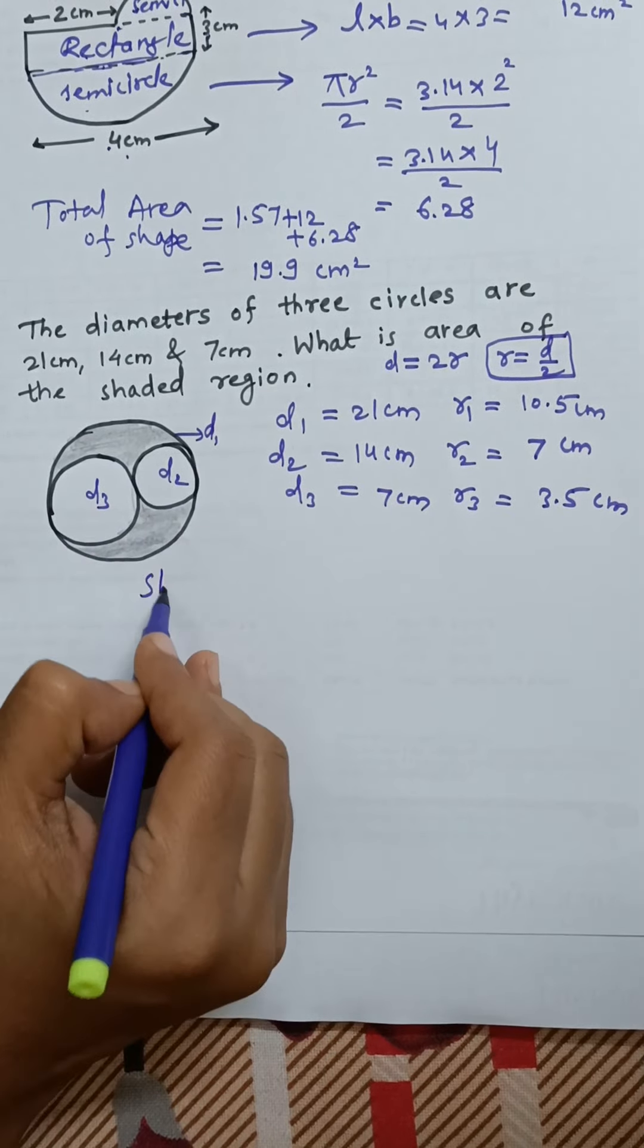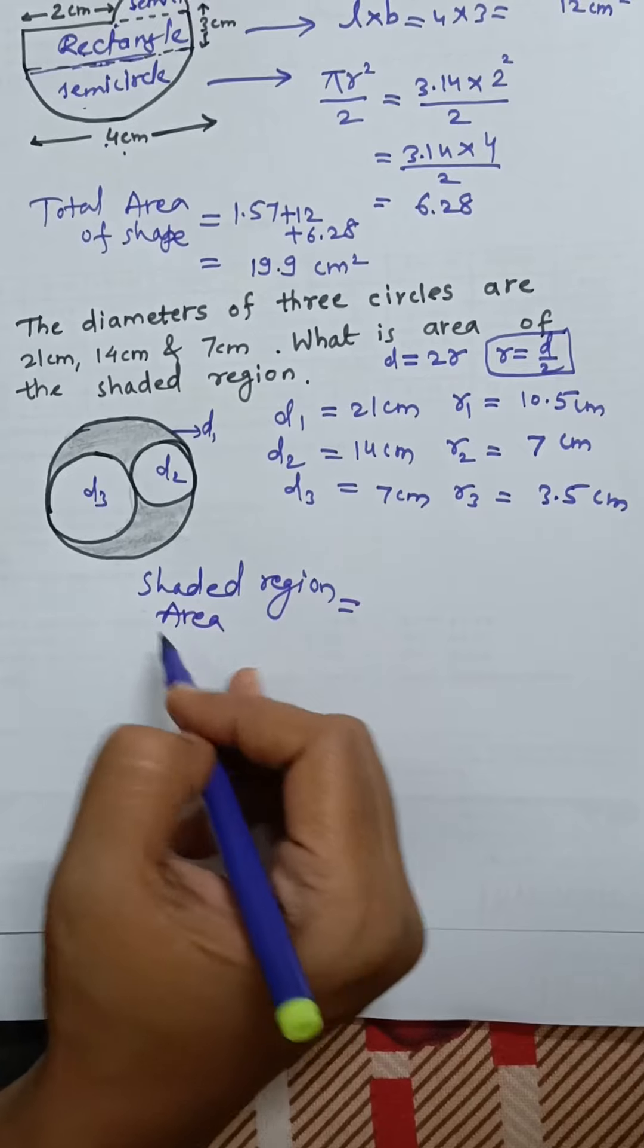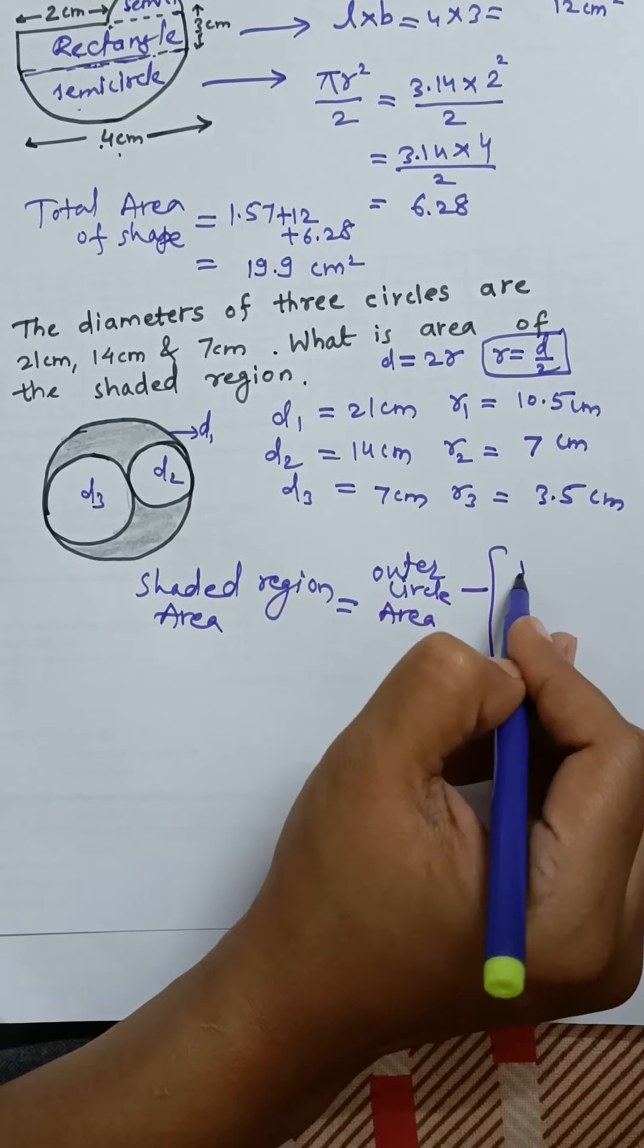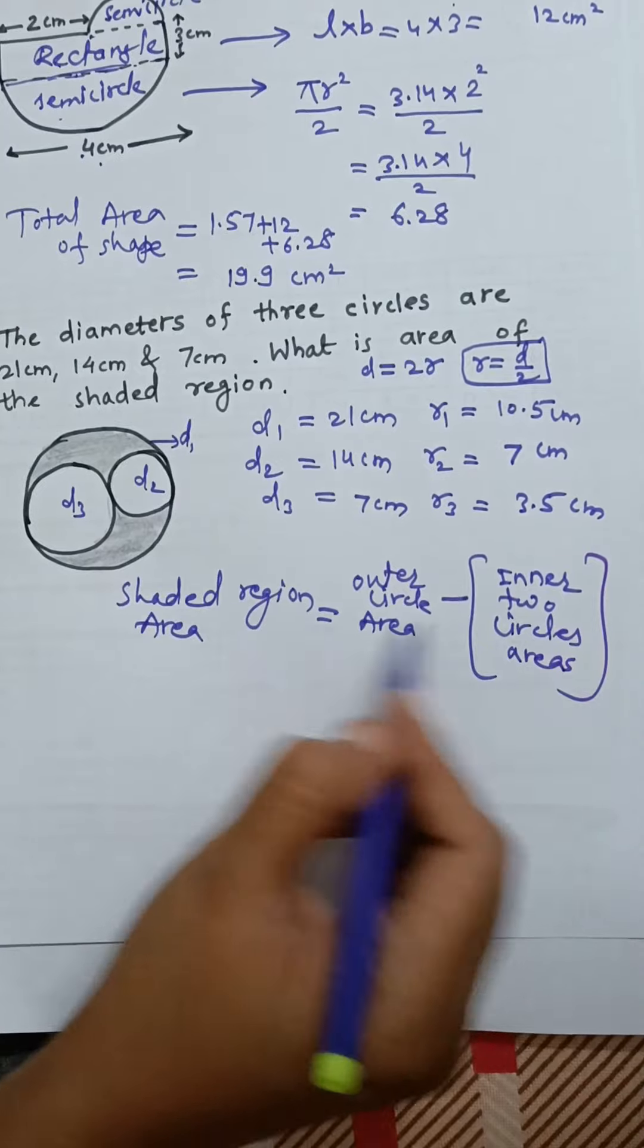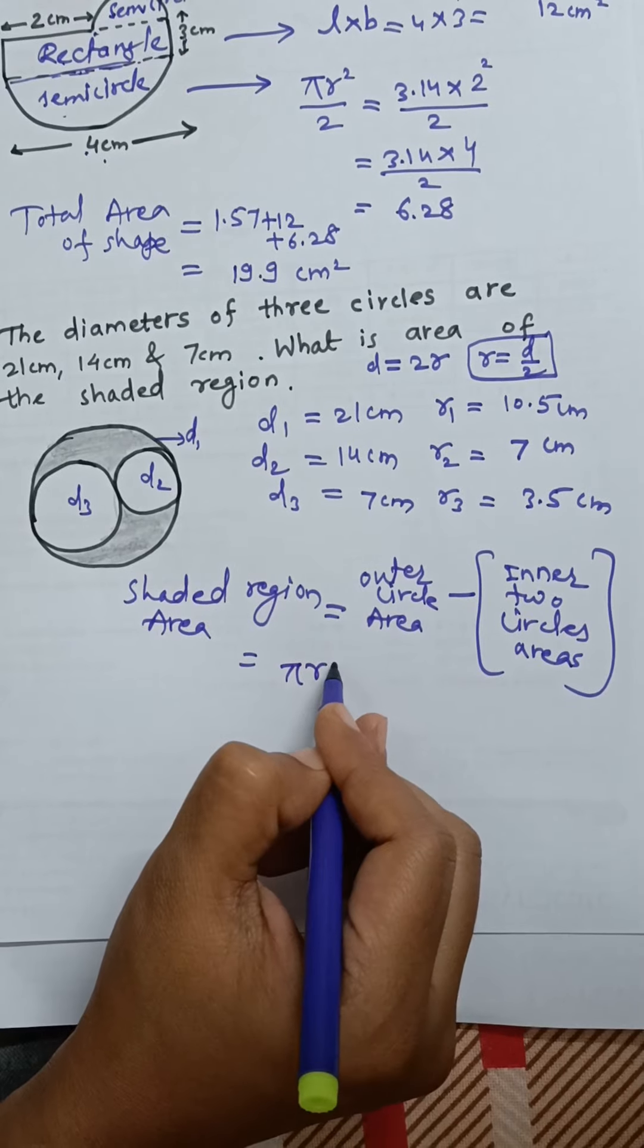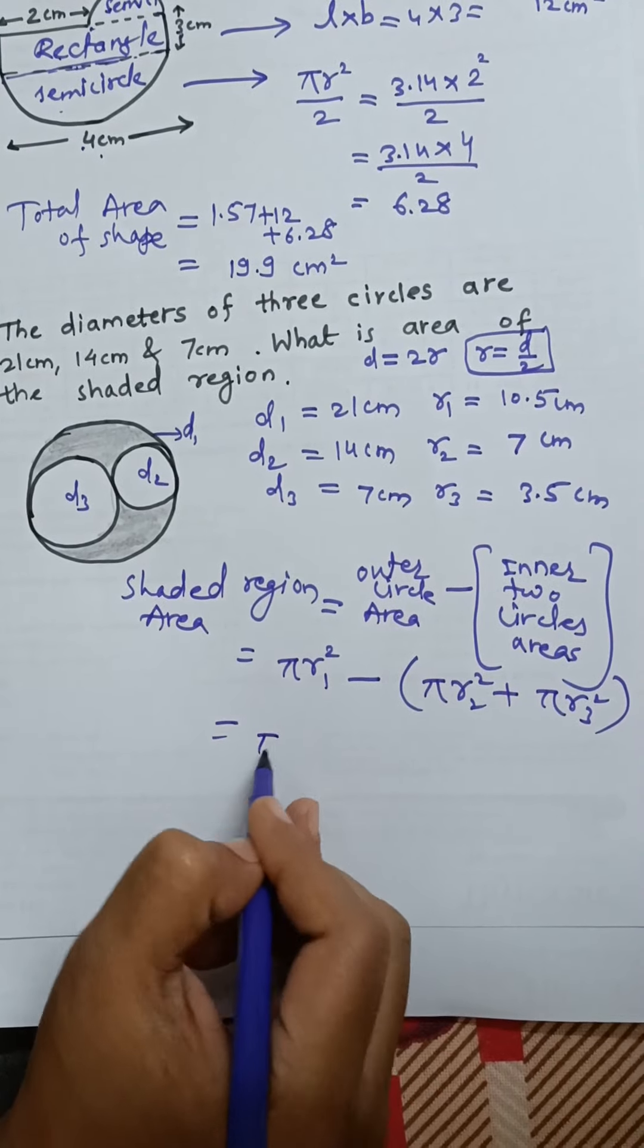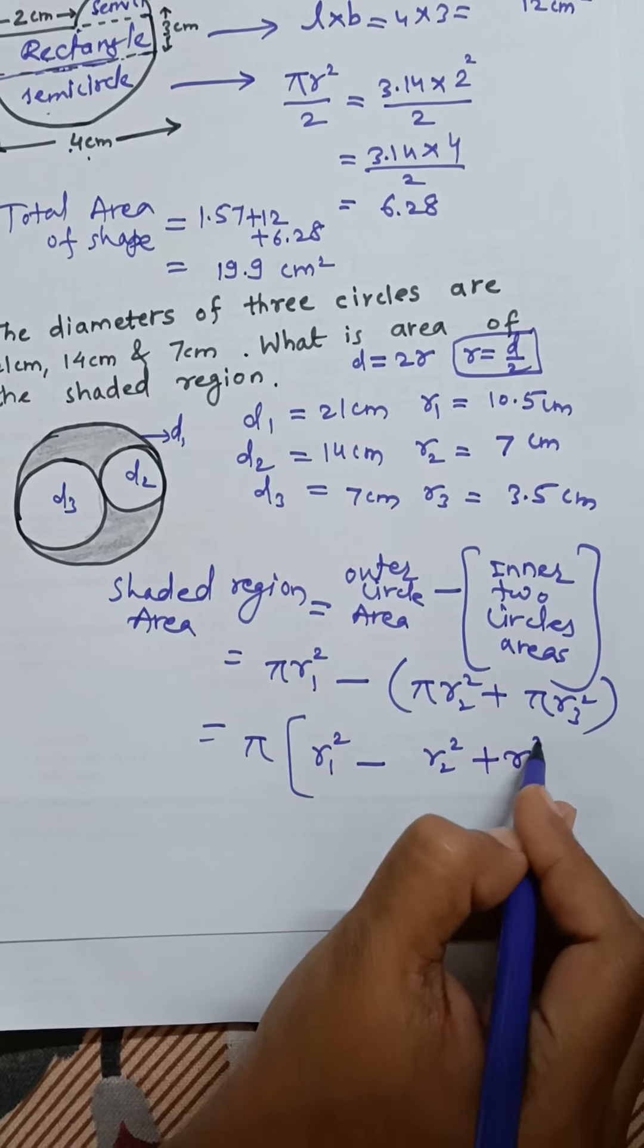Now the shaded region area we can obtain by taking first of all the outer circle's area. Outer circle area will subtract the inner two circles area. So what is outer area? Pi r1 square minus pi r2 square plus pi r3 square. Pi is common, so you take it outside. Inside it will be r1 square minus r2 square plus r3 square.